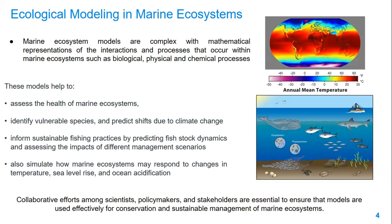These ecological models can do many things: assess the health of marine ecosystems, identify vulnerable species and predict shifts due to climate change, inform sustainable fishing practices by predicting fish stock dynamics, and assess the impacts of different management scenarios. They can also simulate how marine ecosystems may respond to changes in temperature, sea level rise, and ocean acidification. But for this, it is important to improve collaborative efforts in marine science among scientists, policymakers, and stakeholders to ensure that these models are used effectively for conservation and sustainable management.